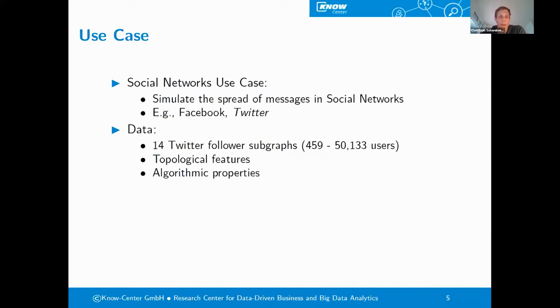To analyze these graphs, we have looked at various topological features, for instance, density, the largest weakly connected components, the diameter, but also the average clustering coefficient, which is one of the most important measures for the analysis of social networks.